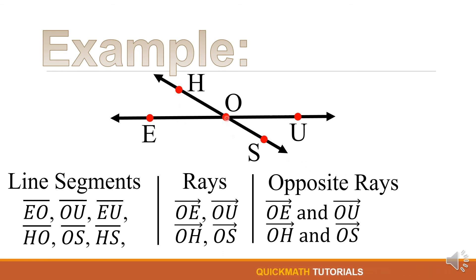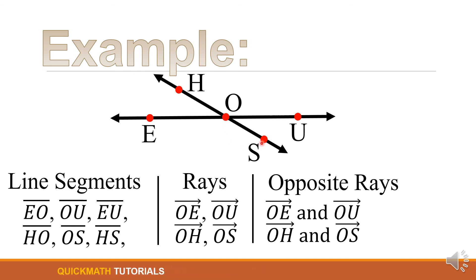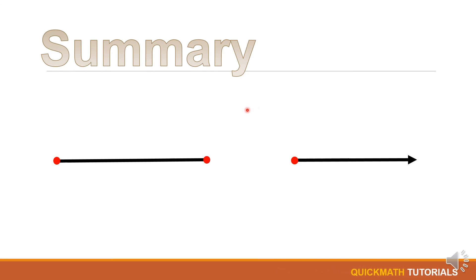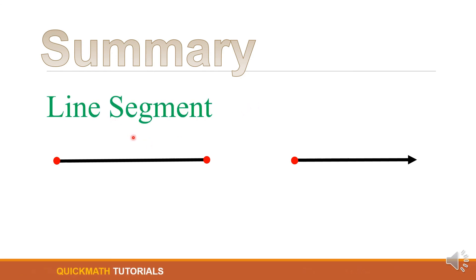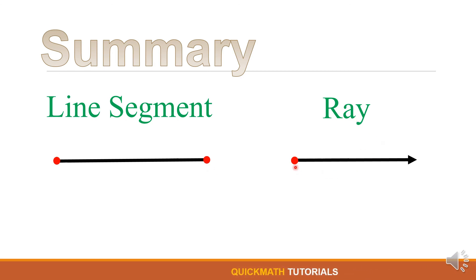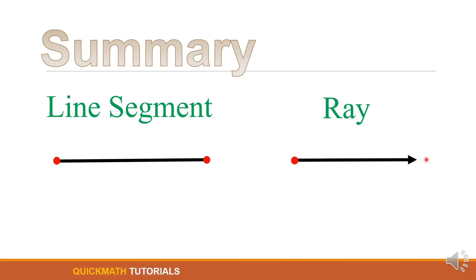Another pair of opposite rays are ray OH and ray OS — their common endpoint is also point O. To sum it up, the subsets of a line are the line segment and the ray. A line segment has two endpoints, whereas a ray has only one endpoint and on the other side it extends infinitely.